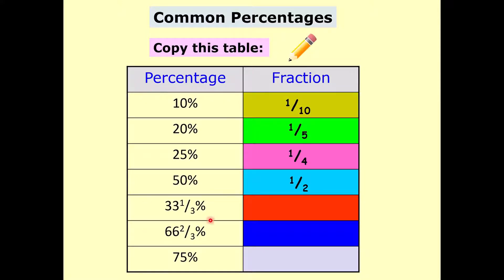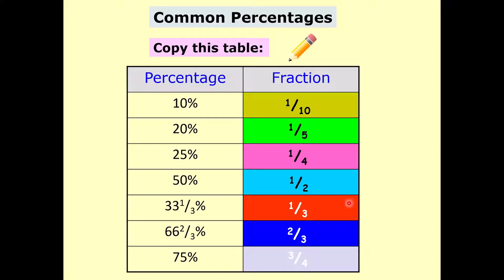This funny-looking percentage, 33 and a third — that's just a third as a fraction. It's rounded because all percentages are out of 100, so if you divided 100 by 3 you would get 33 and a third percent. 66 and two thirds percent is also a funny-looking one, but that means two thirds. And 75% is three quarters. The 66 and two thirds is double 33 and a third, which is where the two thirds comes from. And 75% is three lots of 25 — 25 + 25 + 25 = 75 — so that's where the three quarters comes from.